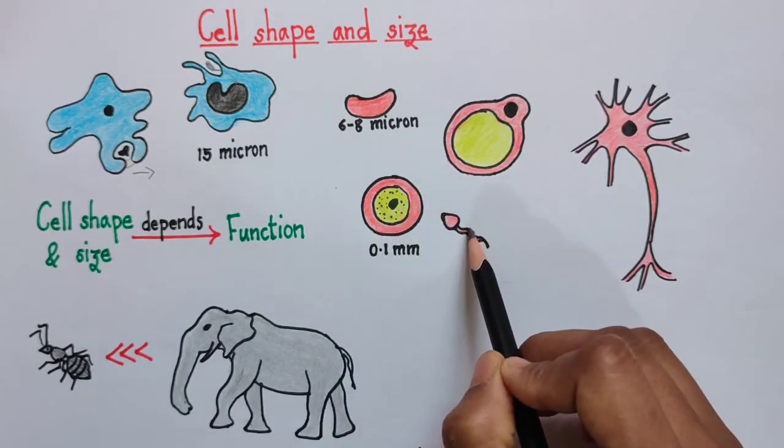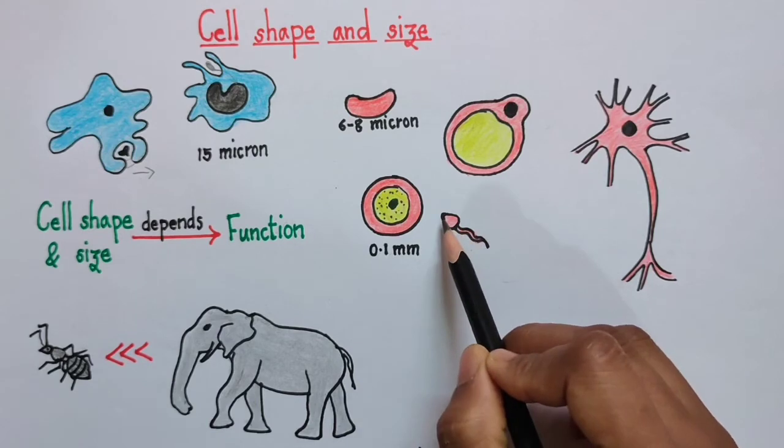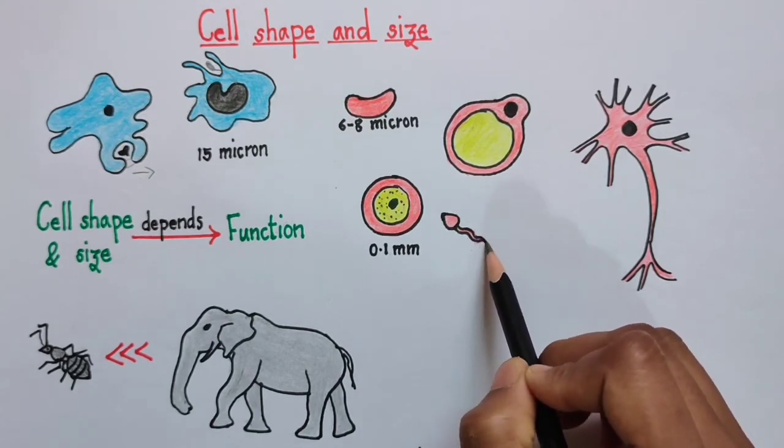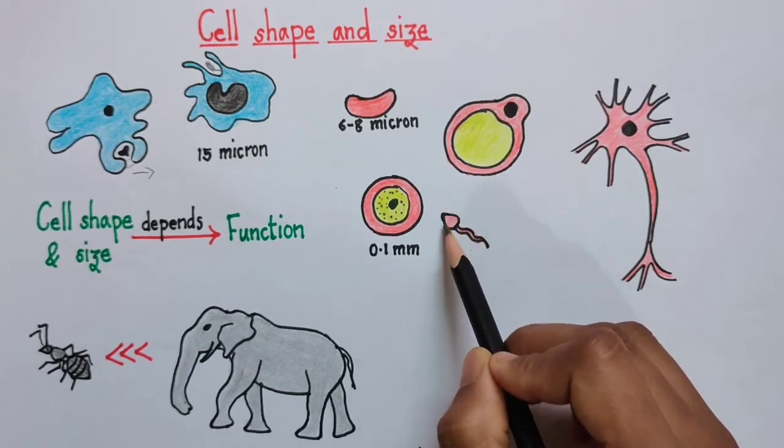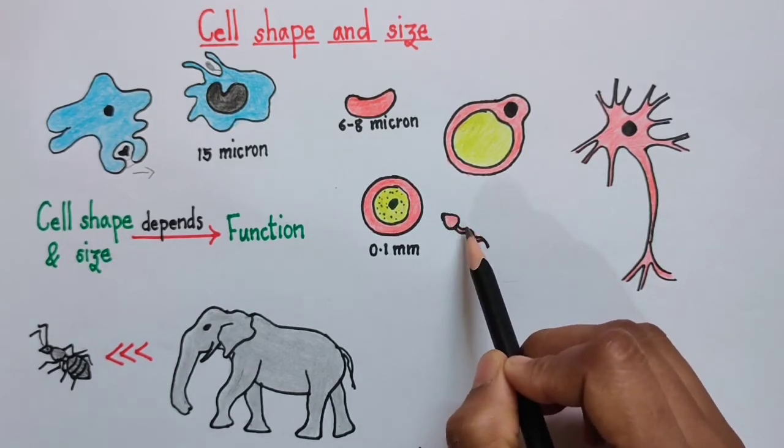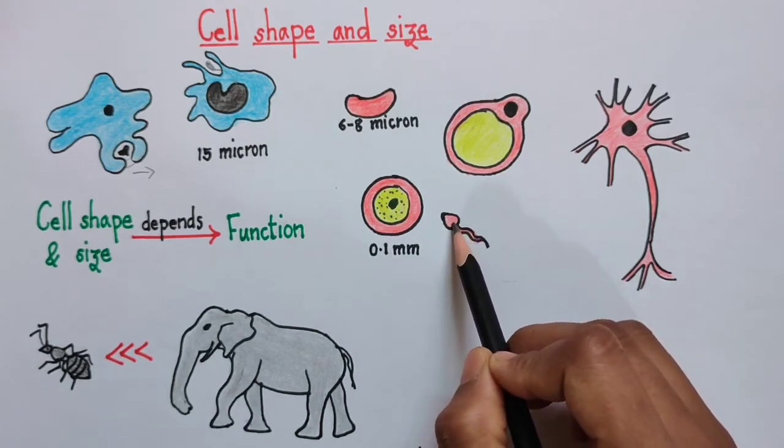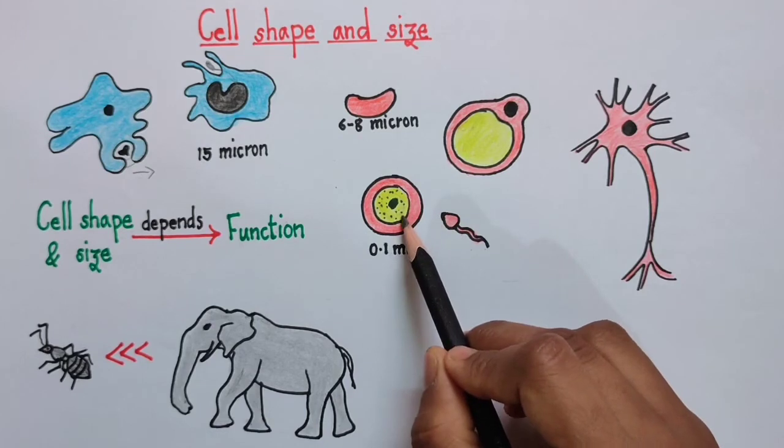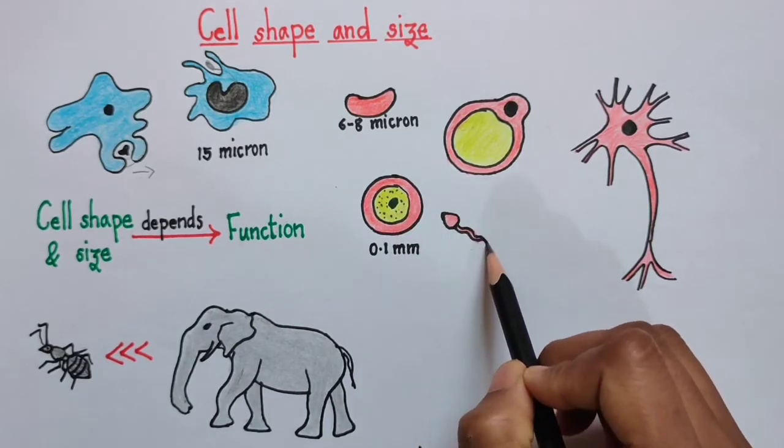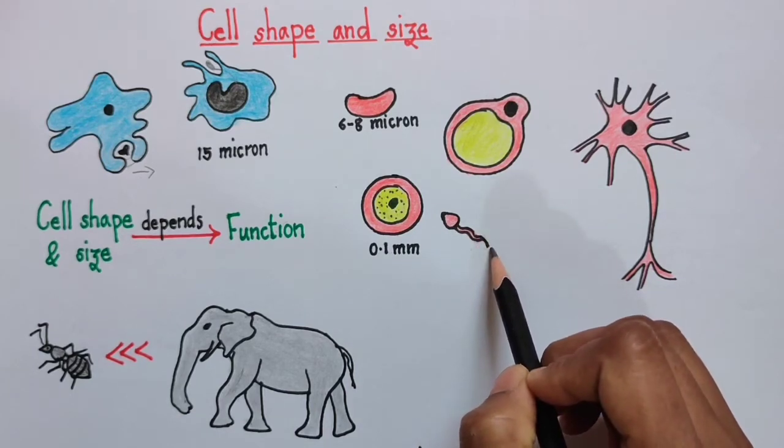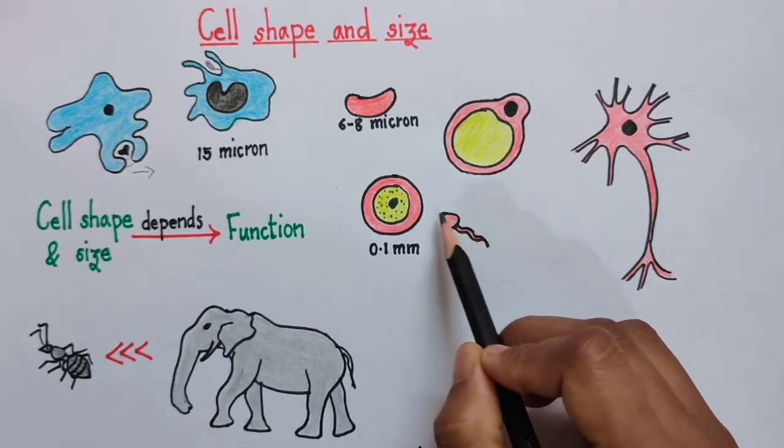Now moving to our last example, this is human sperm. It is more or less straight and it has a long tail. Now what is the reason behind this? Once the sperms are deposited in the body of female, they need to swim and reach to the ovum, and this long tail provides sperm with better mobility, or it enhances the movement of the sperm, making it easier for it to reach the ovum.